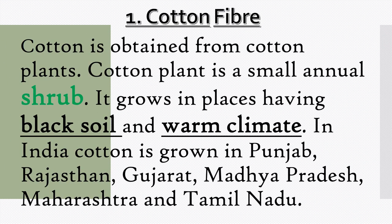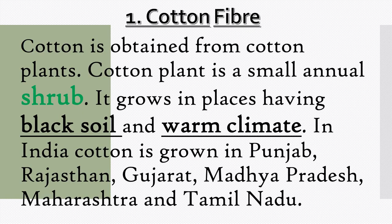Now we will be learning about each of these fibers. Number one, cotton fiber. Cotton is obtained from cotton plants. The cotton plant is a small annual shrub. It grows in places having black soil and warm climate. In India, cotton is grown in the states of Punjab, Rajasthan, Gujarat, Madhya Pradesh, Maharashtra, and Tamil Nadu.